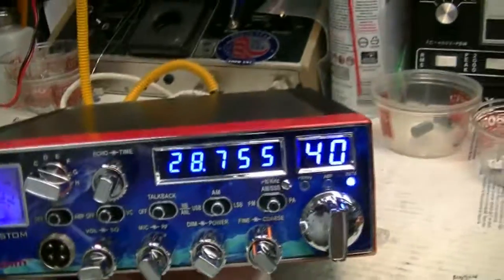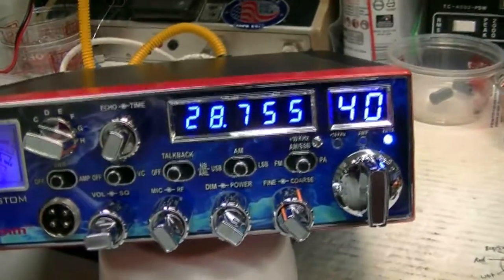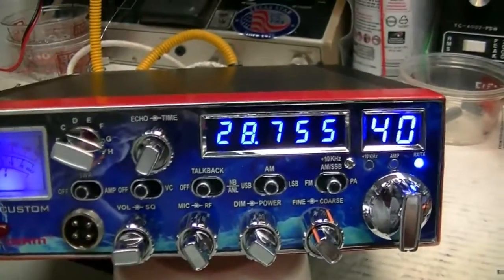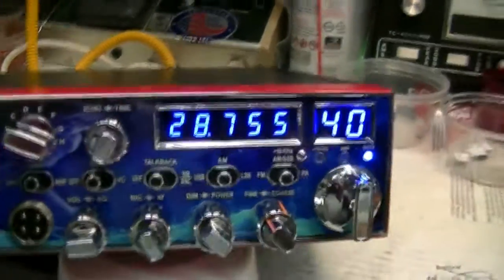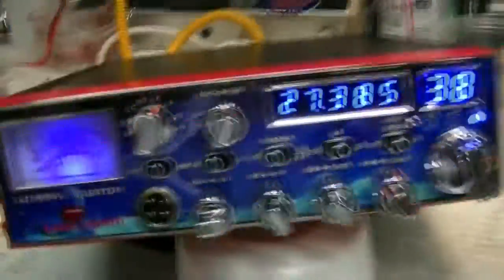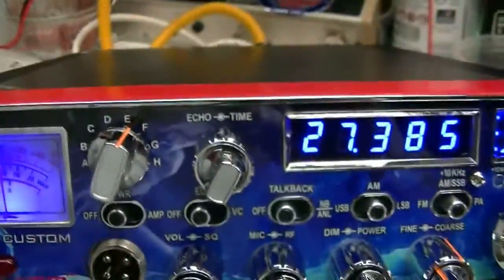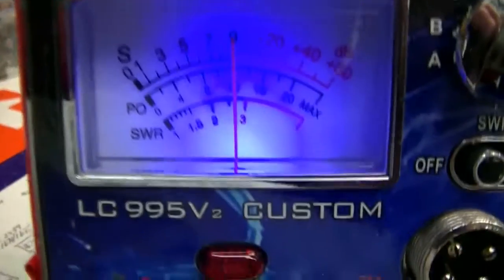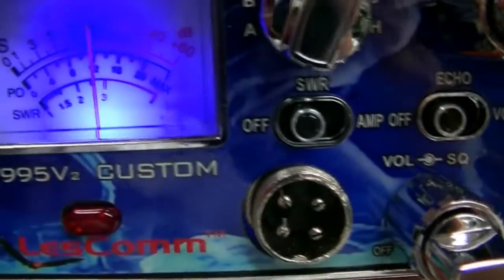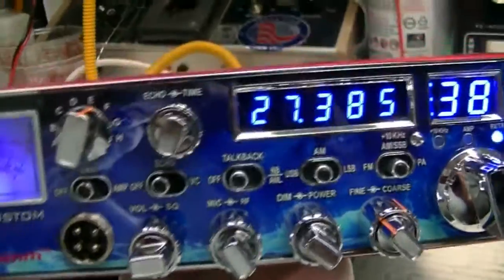All right. Now, well everything is pretty much self-explanatory and I've already showed you the output power. Go back to the CB band. I need to show you the receiver. Let me turn on, there we go. There's S9 on AM. S9 on sideband. Got a really nice receiver.